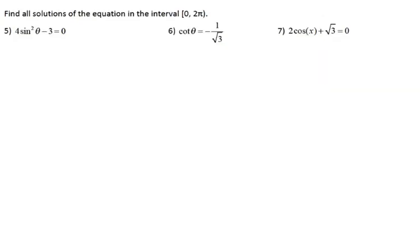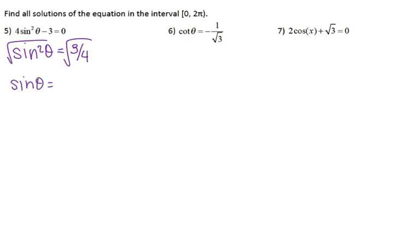The next part of your test is going to look at trig equations. The first thing you need to do is isolate your trig function. I'm going to get sine squared by itself — I'm going to add 3 to both sides and divide by 4. Then to undo a square, you square root. So I have sine of theta equals plus or minus the square root of 3 over 2. I'm trying to find the angle that would give me sine, which is my y coordinate, equal to root 3 over 2. I'm going to use my hand trick.